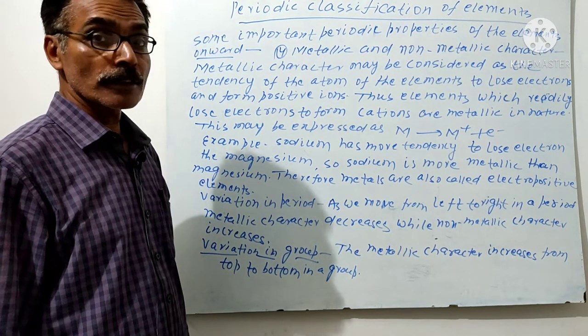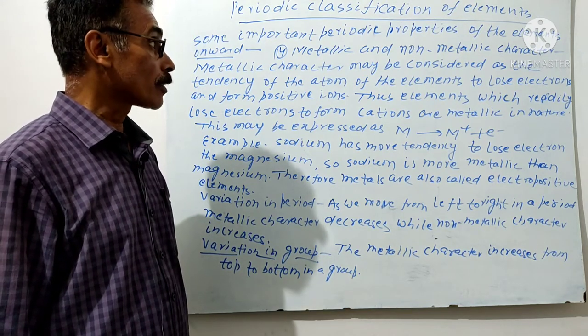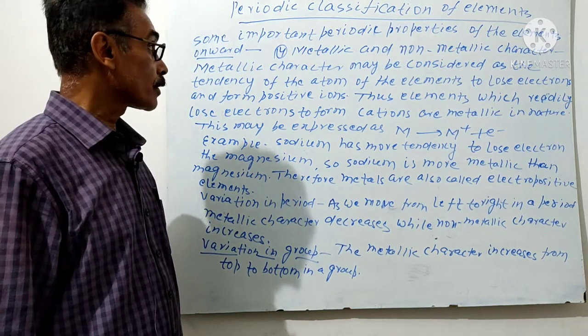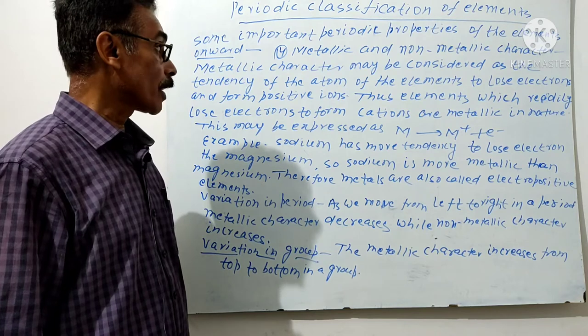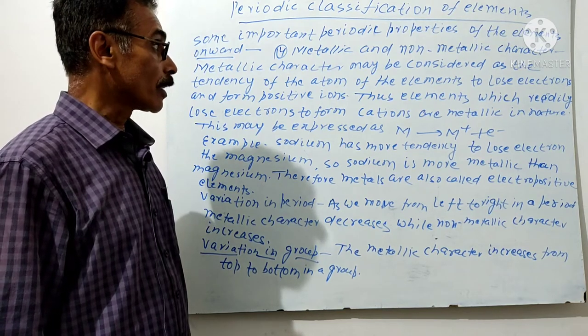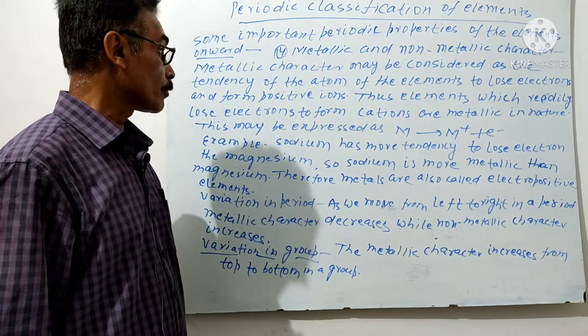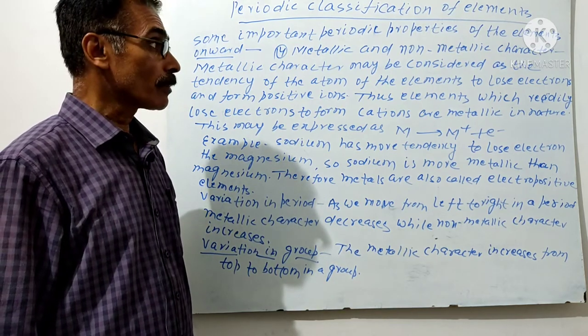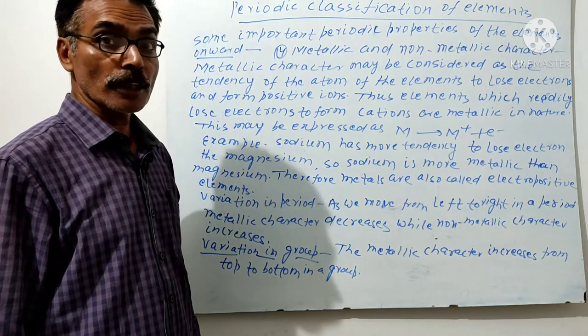Metallic and non-metallic character. Metallic character may be considered as the tendency of atoms of the elements to lose electrons and form positive ions.